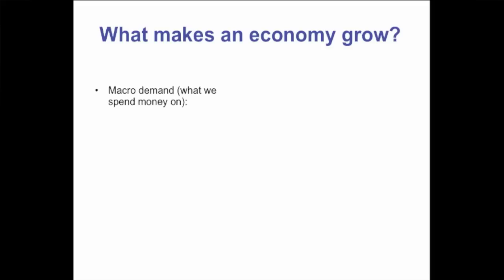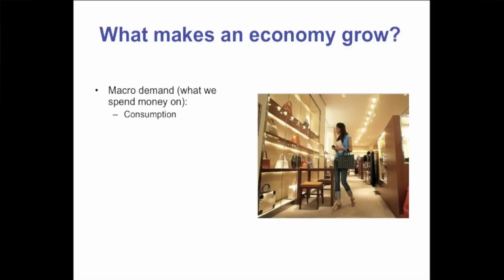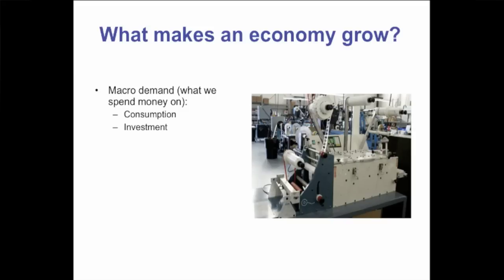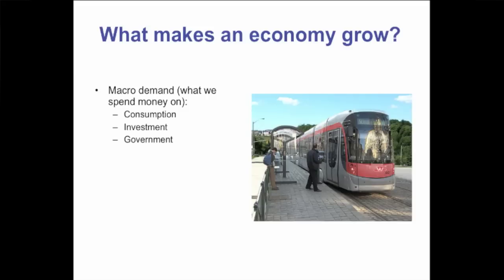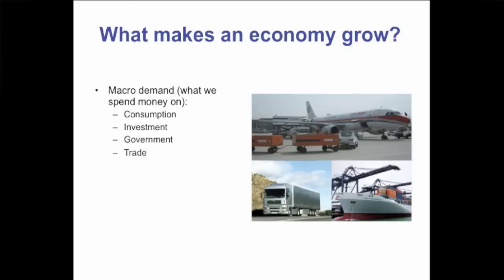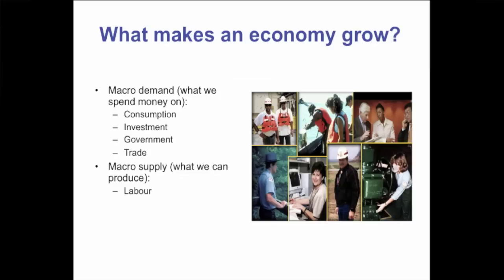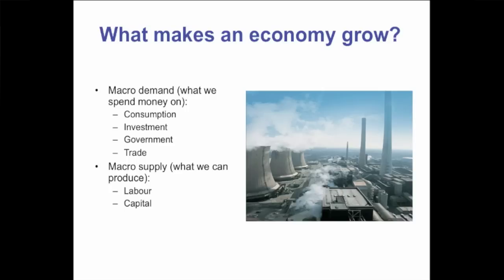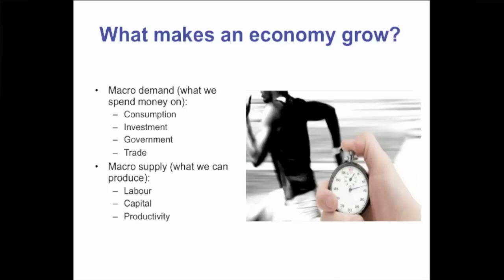Let me explain. First, let's see what makes an economy grow. From the demand side: we spend money on consumption at shops; companies spend money on new equipment — both count as output. Government purchases of goods and services are also part of GDP, as is a positive trade balance. From the supply side, what we're capable of producing depends on our labour force — its size, skills, and employment — our capital equipment, how big and efficient it is, and also productivity, which can include organisational and technological improvements.